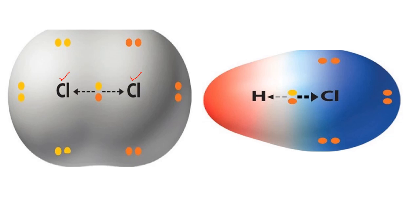So what is your opinion? The shared pair of electrons will be attracted towards both atoms equally — and yes, that is correct. The shared pair of electrons will be attracted equally towards both atoms because both atoms have the same electronegativity value. This is an example of a nonpolar covalent bond.